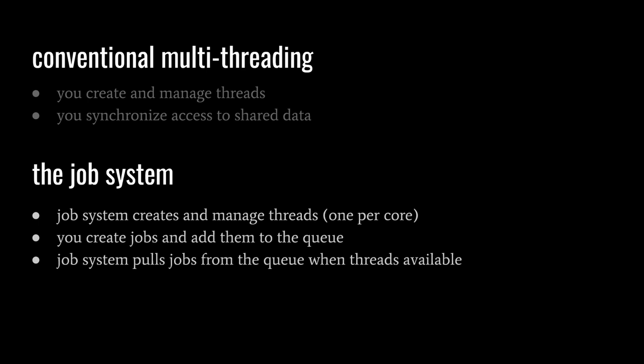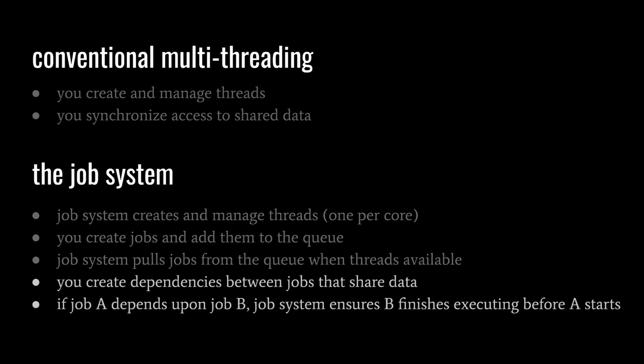It may be the case that two or more concurrently scheduled jobs access the same data. If the shared data is only read, there's no problem, but if one or more jobs mutate the data, we usually want to ensure they run in a certain order and don't overlap in execution. The job system lets us specify dependencies between jobs. If job A depends on job B, the job system ensures job B finishes before job A starts. By splitting our workload into jobs and creating dependencies only where needed, we can maximize use of the cores.